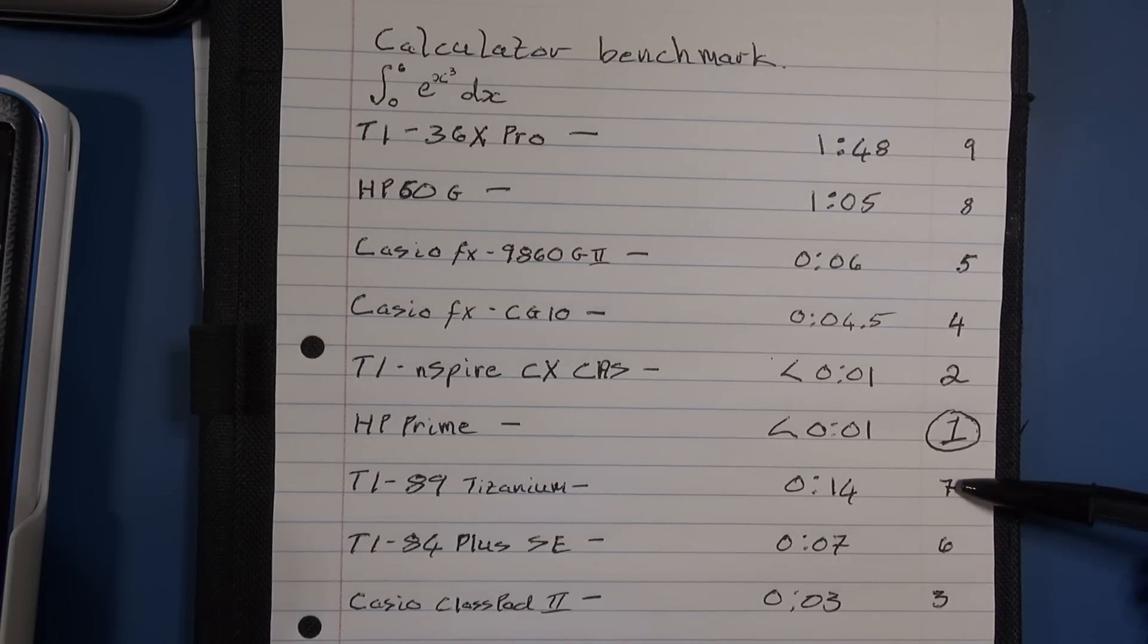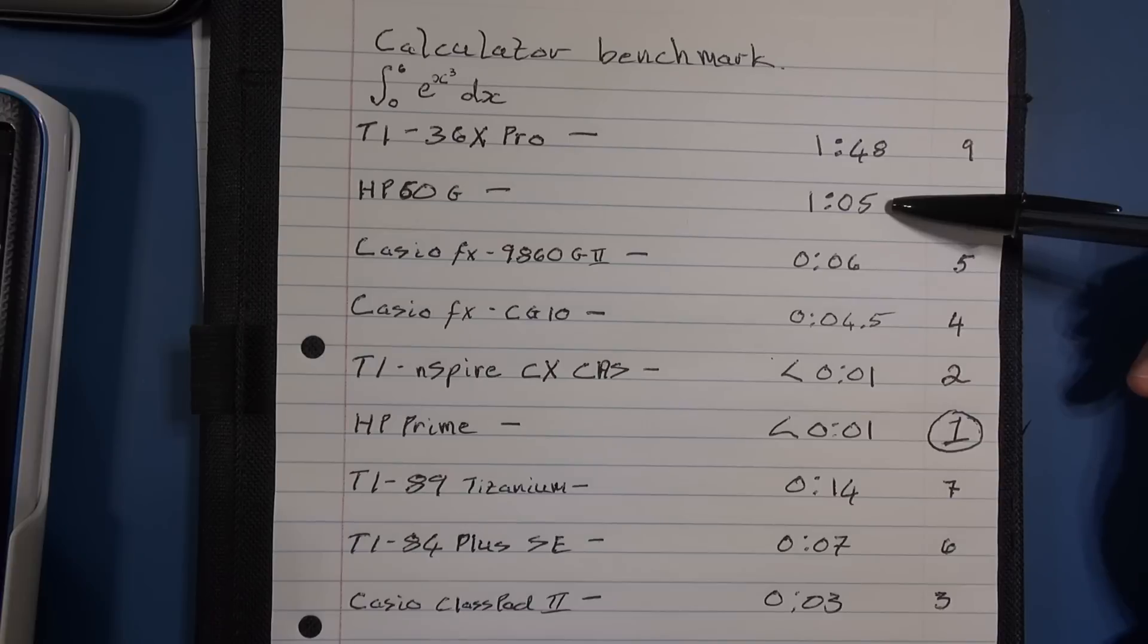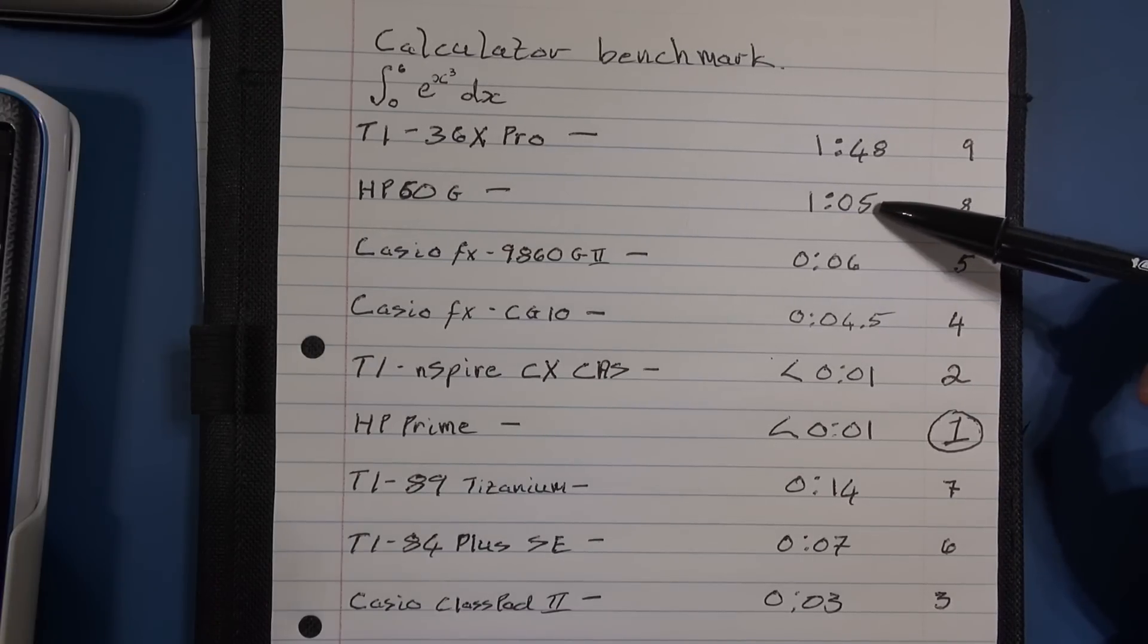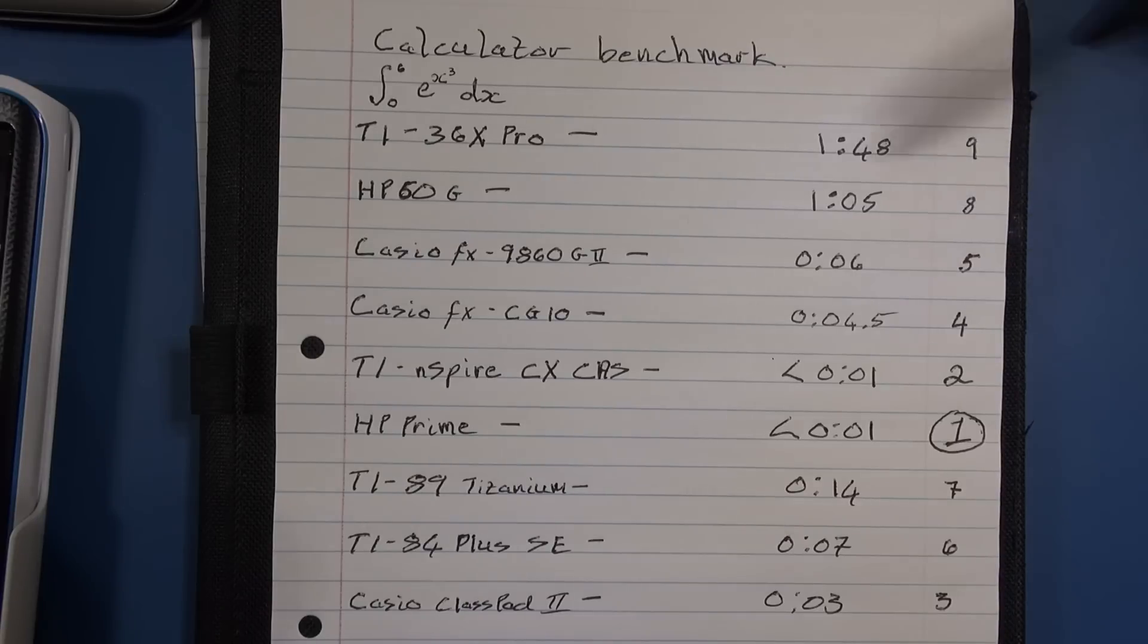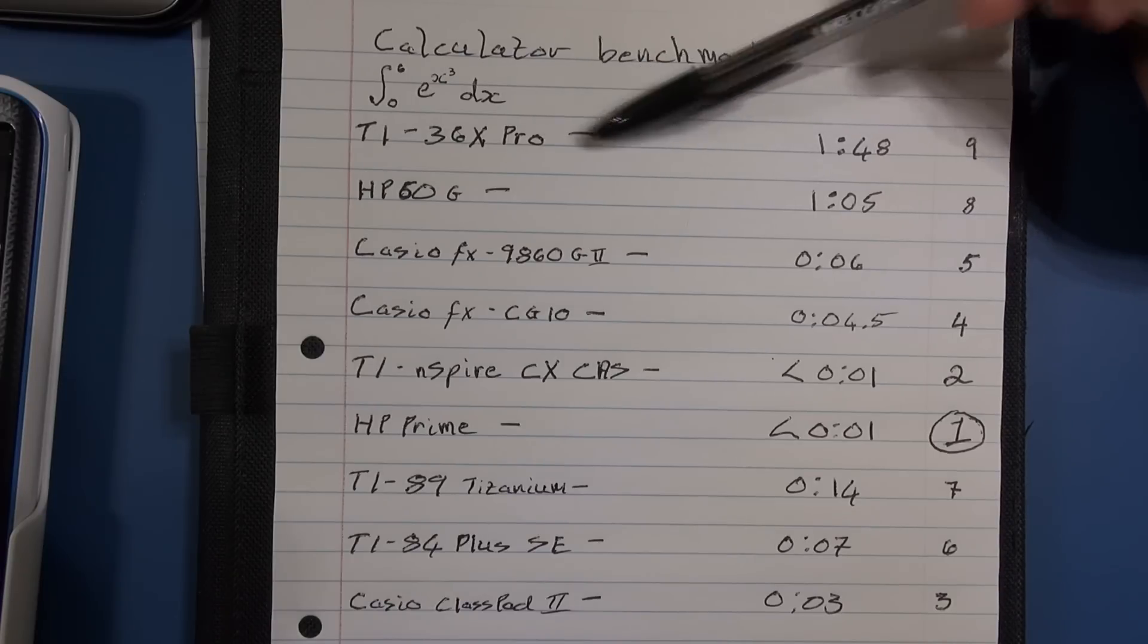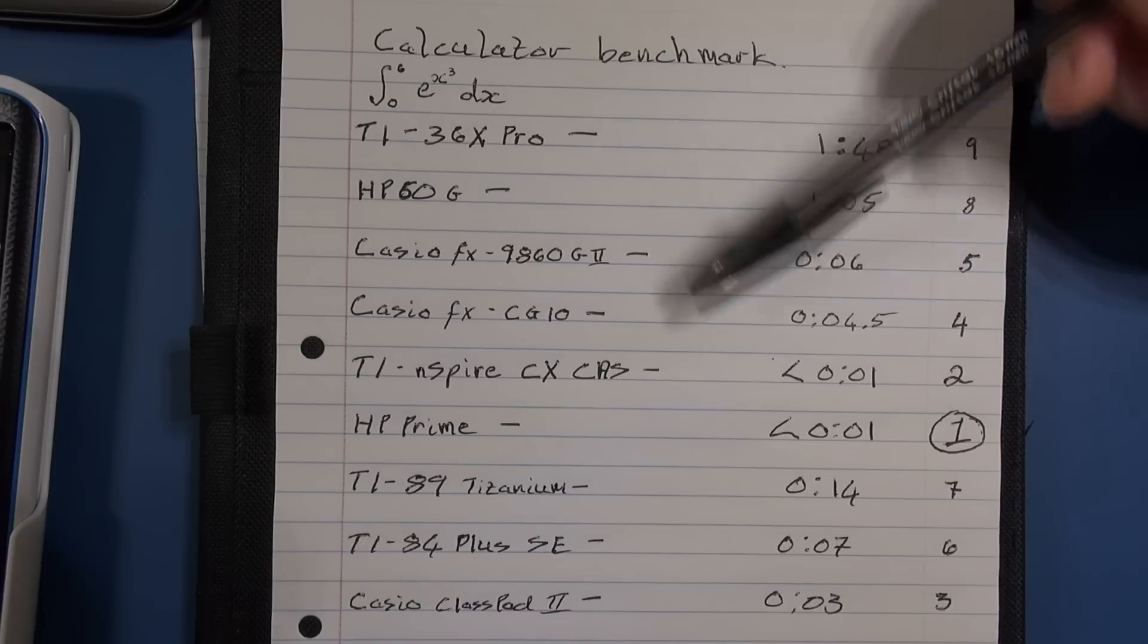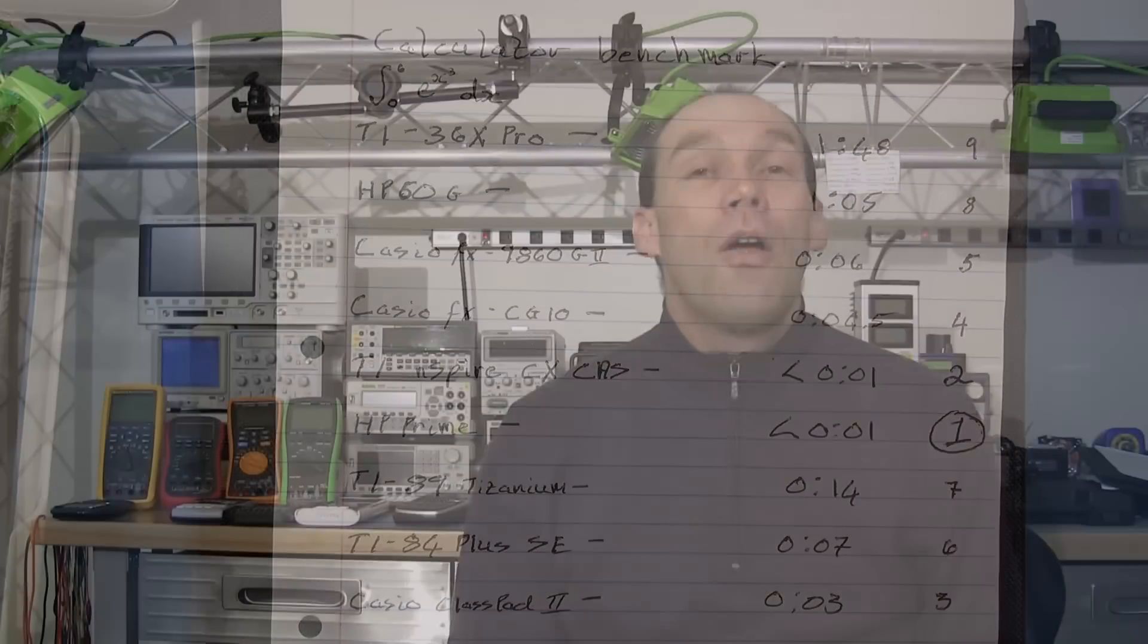And then we go to eighth place, which really boggles my mind, is the HP50G. I certainly expected it to perform far better, but it wasn't. And then we come back to our kind of benchmark on the TI-36 Pro. Now, if people are really interested, I've got a couple of other scientifics which do integration as well. It might just be interesting to see how well they perform. What I might do is actually try and find another scientific calculator, not a graphing calculator, which manages to compete time-wise with some of these.